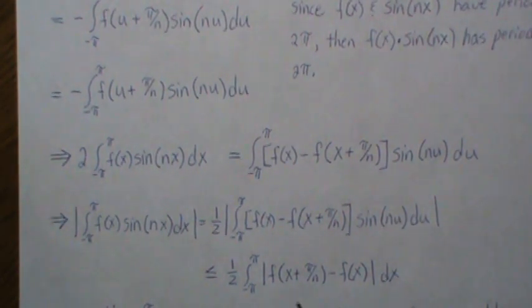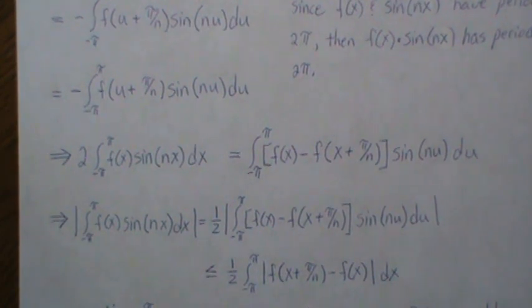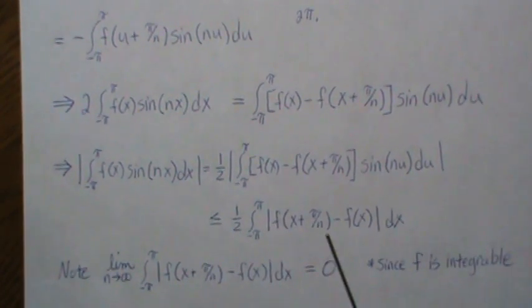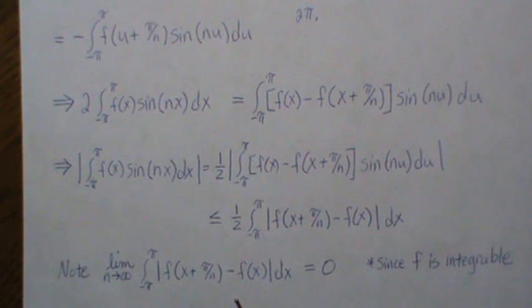Now if we look at what happens as n goes to infinity: since f is integrable—and we're going to assume this is a known result—if we let n go to infinity, the integral of these two functions goes to zero. That's what this says.